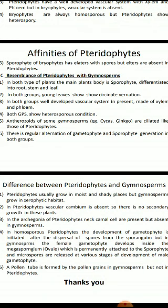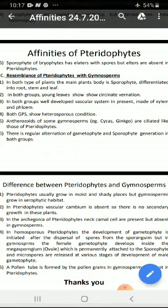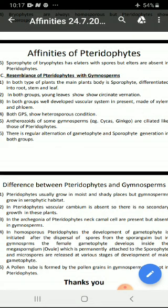Resemblances of pteridophytes with gymnosperms: Dono tarah ki hi plants ke andar mukhya padap shareer jo hai woh sporophytic hota hai, yaani ki root, stem aur leaf mein differentiated paaya jaata hai. In both groups young leaves show circinate vernation. Dono hi groups ke andar vascular tissue system well-developed hota hai jis mein xylem aur phloem paaye jaate hain. Dono hi cases mein plants heterosporous condition show karte hain.